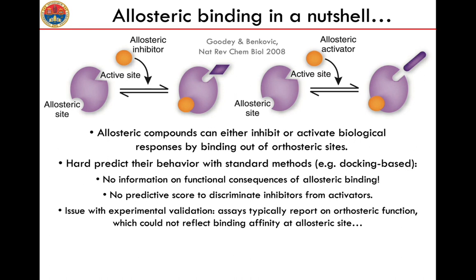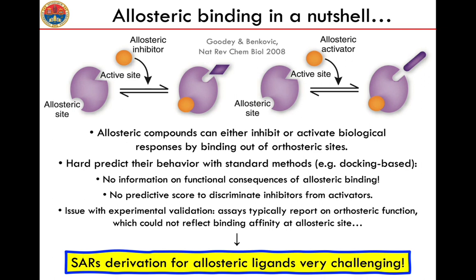First, it's very difficult to catch the conformational changes that derive from the binding of allosteric ligands. In addition, scoring functions are generally not very good at reproducing the affinity of allosteric binders. The same is true for experimental methods, which are generally good at providing affinity information for orthosteric sites but are generally poorly informative on allosteric sites. All these issues sum together so that deriving structure-activity relationships for allosteric ligands is very difficult — much more challenging than for standard binding events.